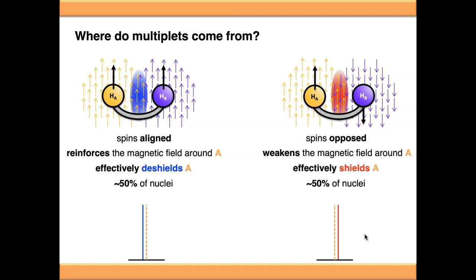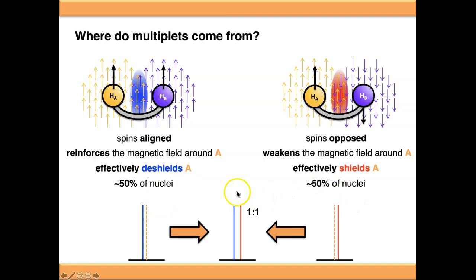When we talked about population excess in the theory video, approximately 50% of nuclei are in one spin state and approximately 50% are in the other. So your odds of being in each of these scenarios is pretty much 50-50. Therefore, the final signal is a 1:1 doublet — one peak for each spin state, each with about 50% probability, giving the doublet its 1:1 intensity.